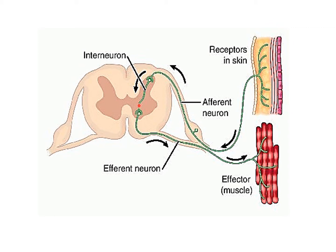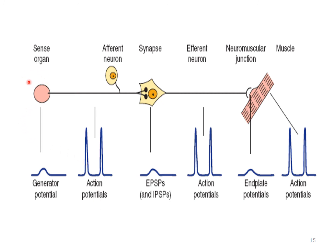The center may be in the spinal cord or in the brain. The stimulus is recognized by the receptor, which is also called the sense organ. The receptor develops the receptor potential, also called the generator potential. Once this reaches the threshold, it develops an action potential in the afferent fiber. The action potential is always propagated — it reaches the center, where the stimulus is processed and a command is generated.